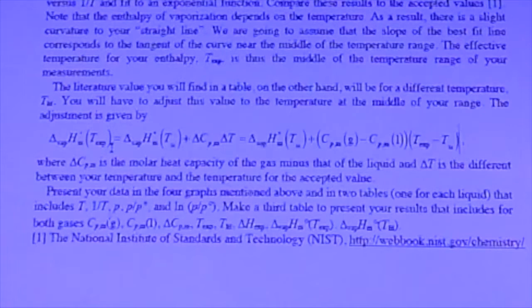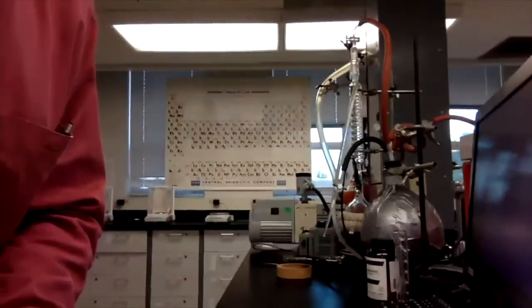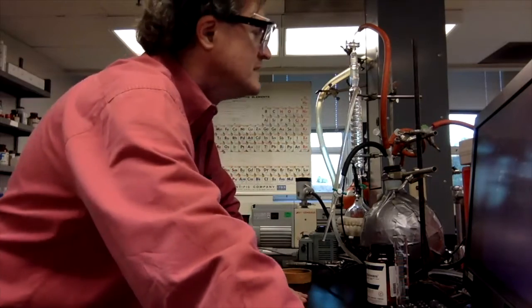What that allows you to do is create a literature value appropriate to your experimental temperature. Then you're going to put this all in a nice table and compare your results for these two liquids to the results from the NIST WebBook corrected for temperature appropriately.